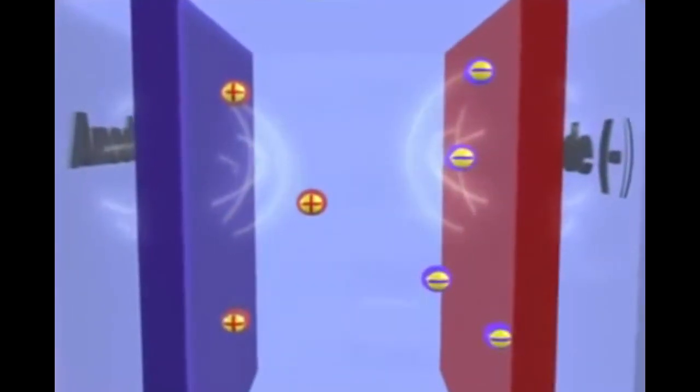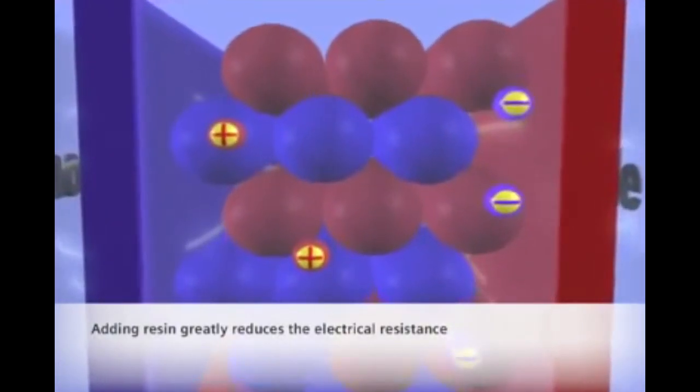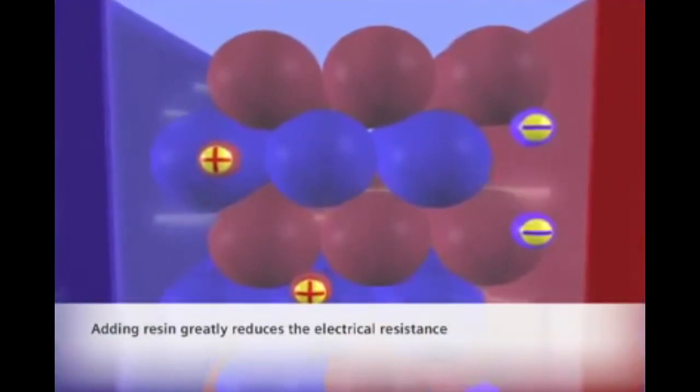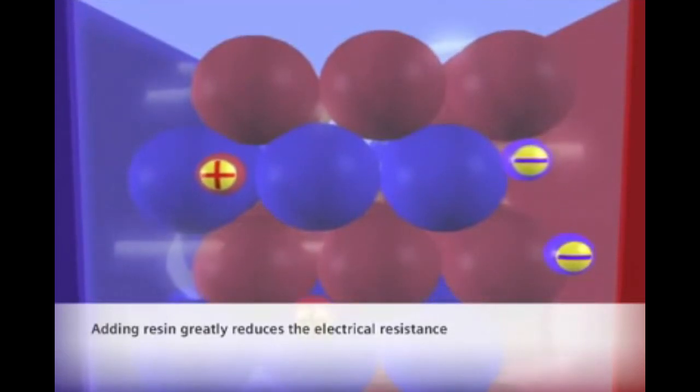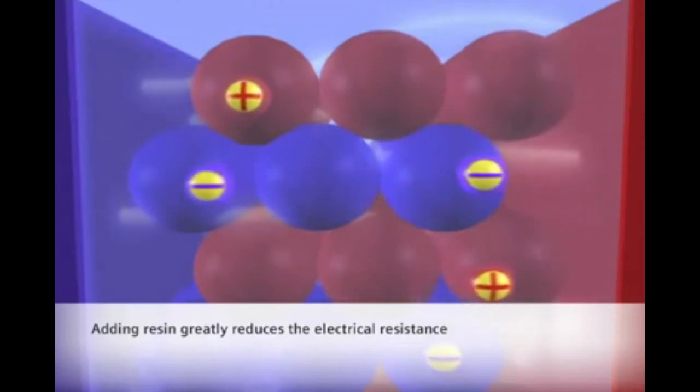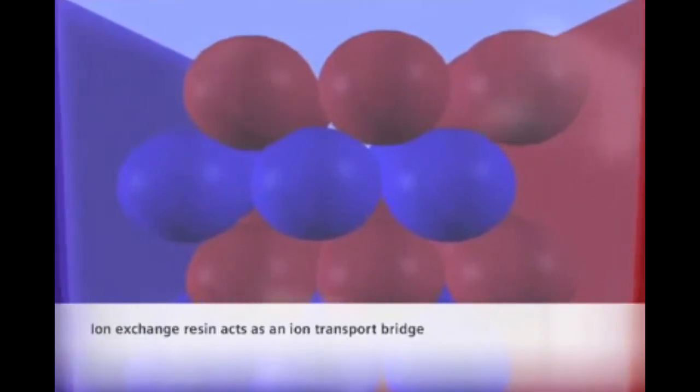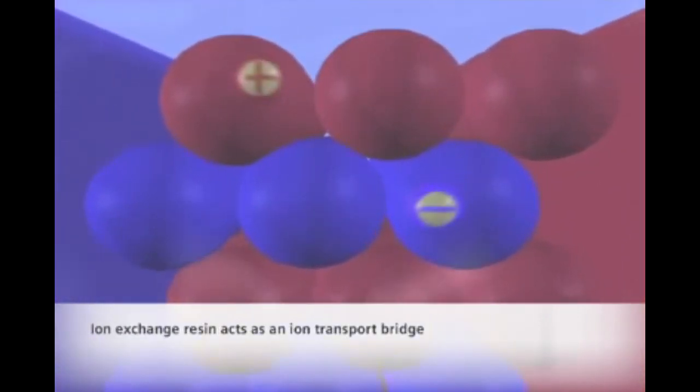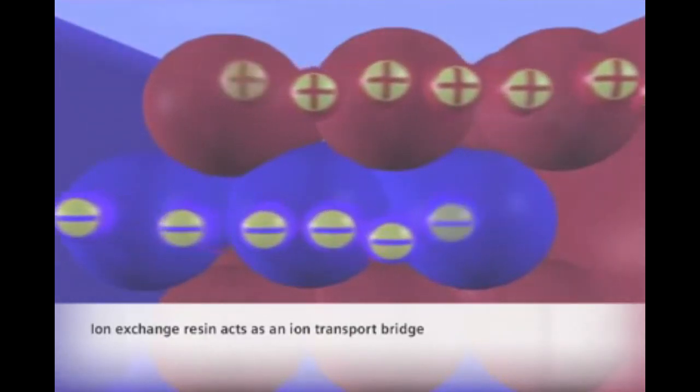IonPure CEDI technology solves this problem by sandwiching a mixture of cation and anion-selective resins between the two membranes. The large surface area offered by the resin beads effectively eliminates the ion-diffusion resistance and allows the ions to move freely even in ultra-pure water solution. The surface of the resin beads acts as a conductive path, effectively acting as a bridge for the ions to move quicker toward the membrane surface, faster than if they were in water alone.